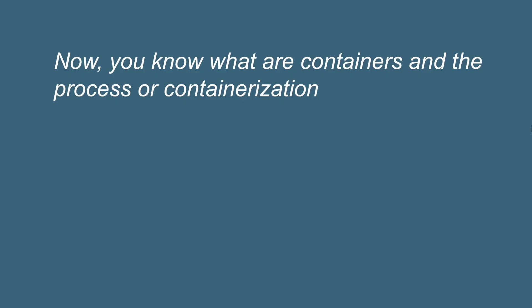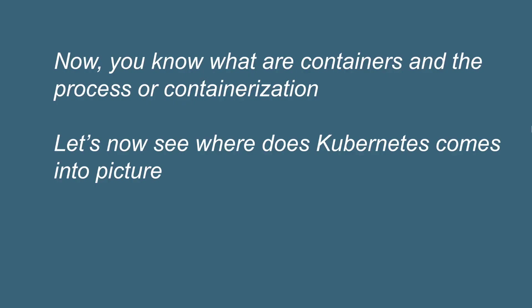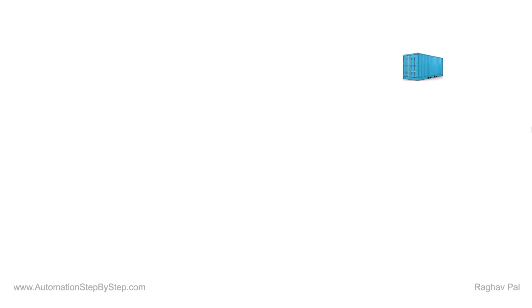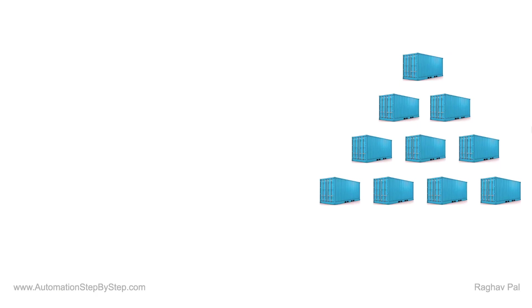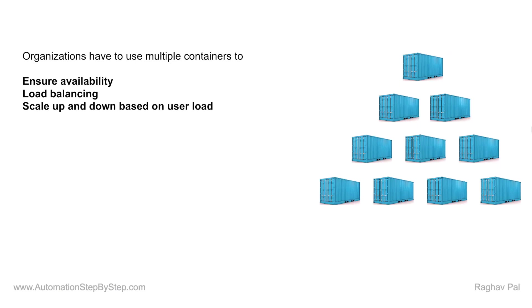Now we know what containers and containerization are. Let us understand where Kubernetes fits into the picture. In the real world, large organizations use multiple containers for every application — tens and hundreds of containers — to ensure availability so the application is always available, to handle load balancing so no single server is overloaded, and to take care of scaling up and scaling down based on user load.